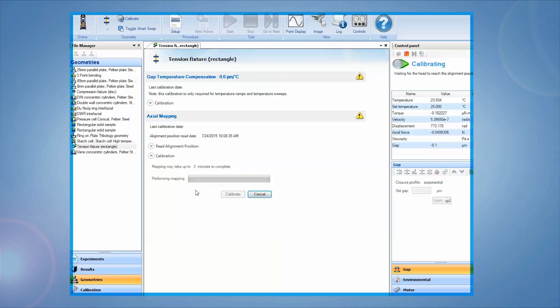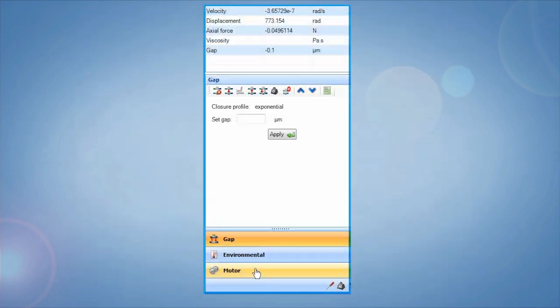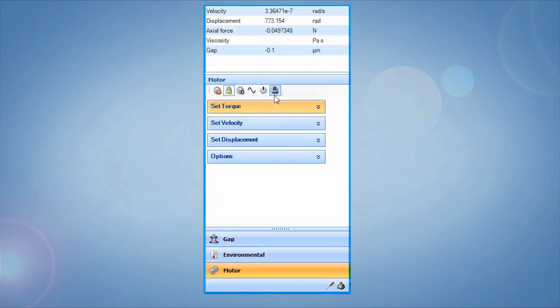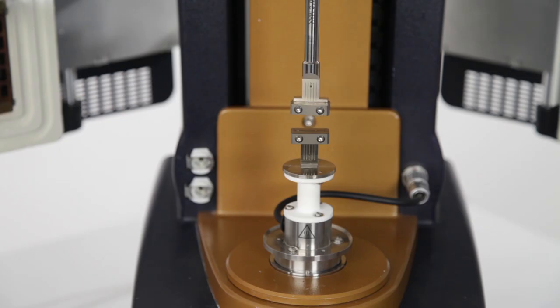You can now use the move to alignment position button in the motor control panel at any time to return the geometry to the alignment position. This guarantees the geometries are always aligned with one another during testing.